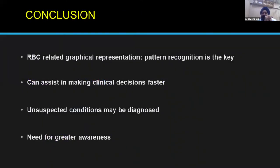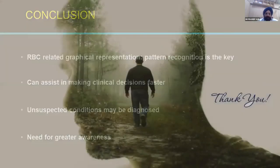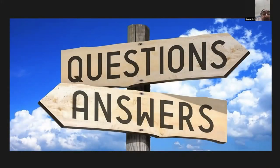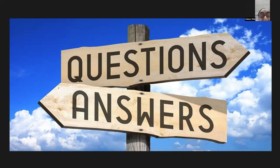RBC-related graphical representation and pattern recognition is the key. It can help in making clinical decisions faster, and sometimes unsuspected conditions can be diagnosed. Most importantly, there needs to be greater awareness to look at this data. These modern analyzers are throwing a lot of data at us, and I personally feel we are not doing full justice to the data they produce. With these words, I would like to thank you all, and I will be glad to answer any questions. Thank you — that was very crisp, precise, and to the point. It will be very helpful for those listening.